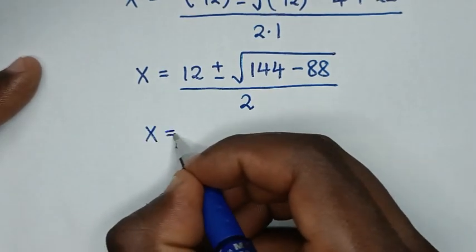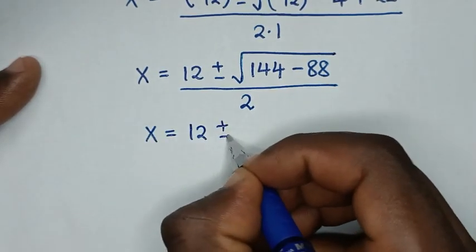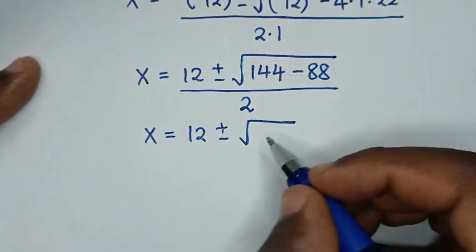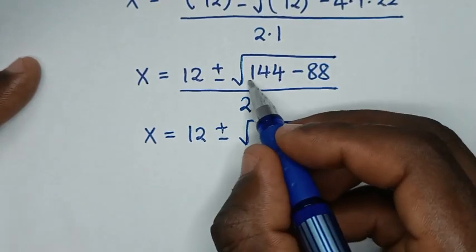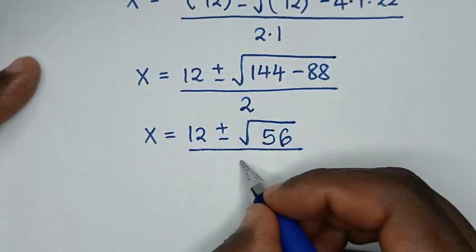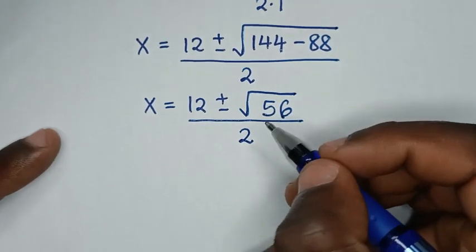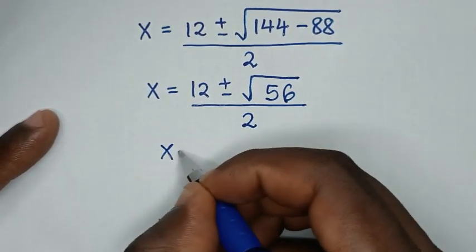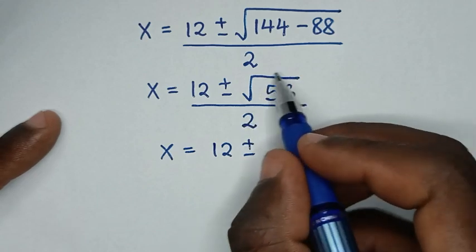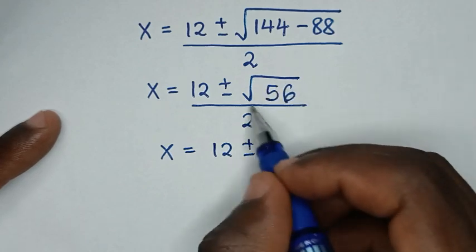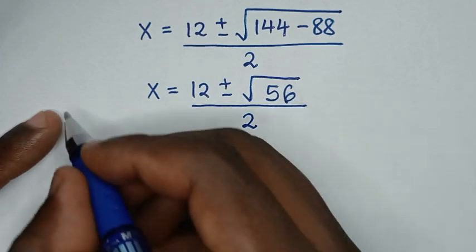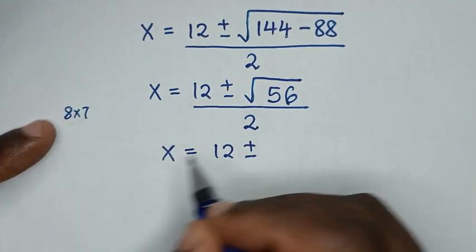So it will be x is equal to 12 plus or minus square root of (144 minus 88). So that gives us 56 under the square root. Then over 2. Now, 56 is 8 times 7.